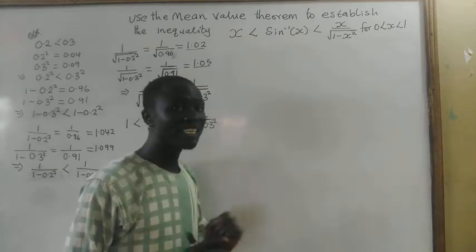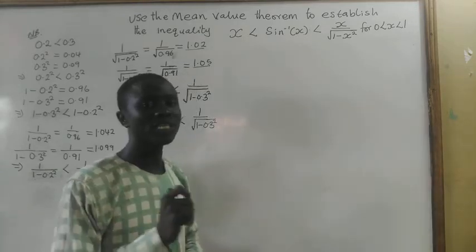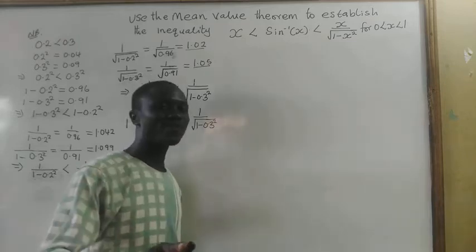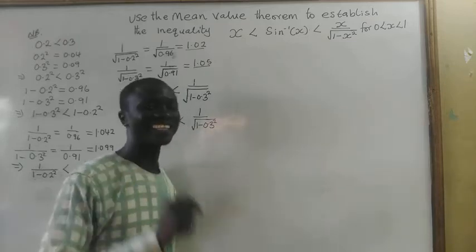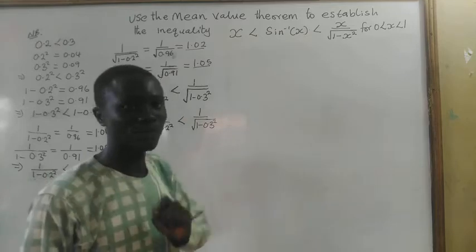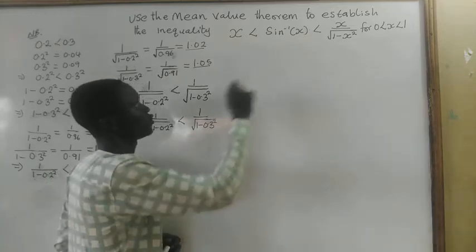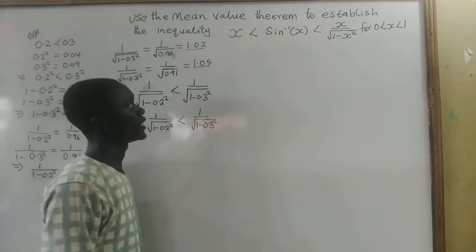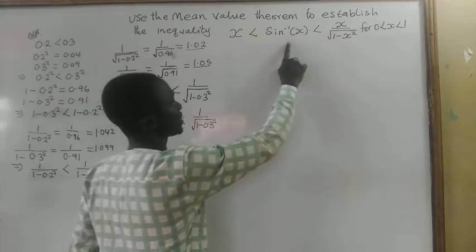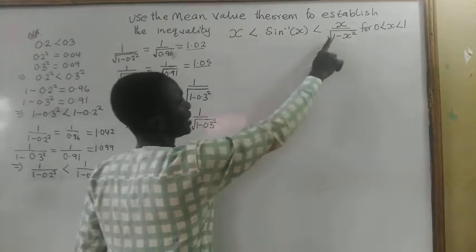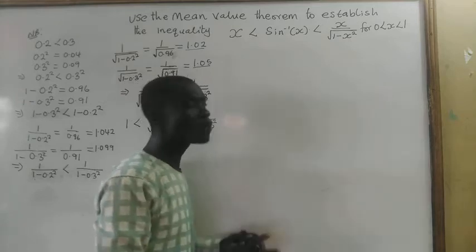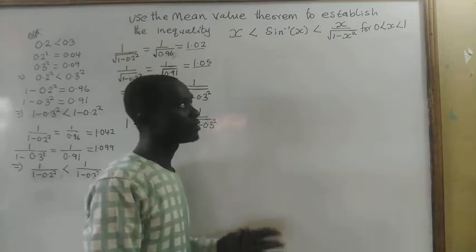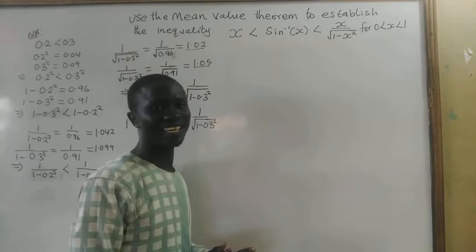In this lecture, we are going to prove inequalities using the mean value theorem. We are to prove, using the mean value theorem, that sin inverse of x is greater than x but less than x divided by the square root of 1 minus x squared, for x greater than 0 but less than 1.